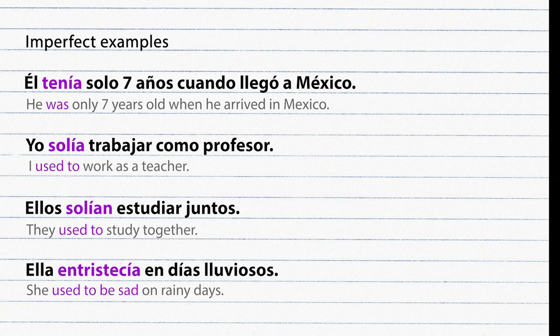Examples of the imperfect tense: He was only 7 years old when he came to Mexico. I used to work as a professor. They used to study together.